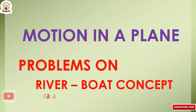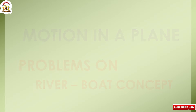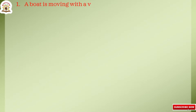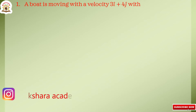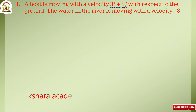Let us go to today's topic: motion in a plane, problems on riverboat concept. Go to the first one. In this question, the given: a boat is moving with a velocity 3i cap plus 4j cap with respect to the ground.